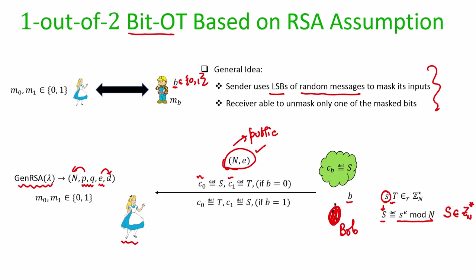Depending on B, Bob knows that element C_B equals big S. The crucial piece of information to remember is that Bob knows the LSB of element small s because he himself picked it. We will come back to this fact — how exactly the knowledge of LSB(s) is going to play a crucial role in the protocol.